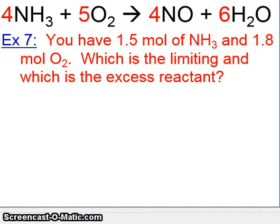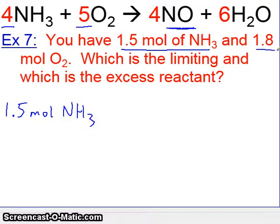Problem number one says you have 1.5 moles of NH3 and 1.8 moles of O2. Which is the limiting and which is the excess reactant? So these are going to be our amounts that we'll be looking at. And let's go ahead and convert both of these to one of the products. It doesn't matter which product. Let's go ahead and use the first product, NO. And then whoever forms less will be our limiting. So that's how we're going to solve the problem. We'll have to do two stoichiometry calculations. We'll have to convert 1.5 moles of NH3 and 1.8 moles of O2.